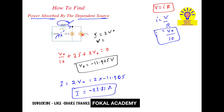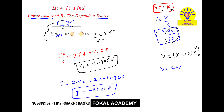Now we need the voltage V across the dependent source. The voltage drops across the two 10 ohm resistors in series give the total voltage across the dependent current source. So V equals total resistance times current I: that is (10 plus 10) times V0 over 10, which gives V equal to 20 times minus 11.905 over 10. Simplifying, V equals minus 23.81 volts.